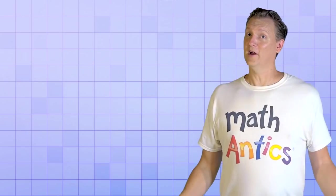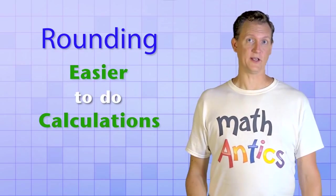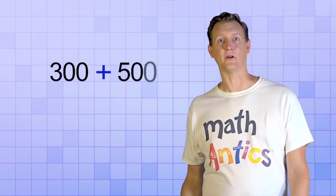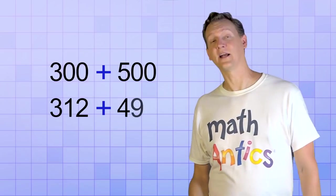But you might be wondering, why would we ever want to make a number less precise in the first place? What is rounding good for? Well, rounding numbers can often make them a lot easier to do calculations with. Like, it would be a lot easier to quickly add 300 and 500 than it would be to add 312 and 498.